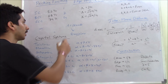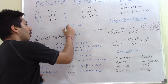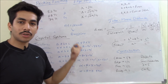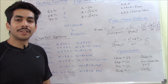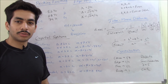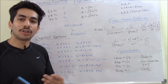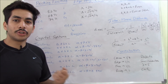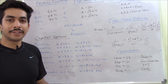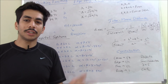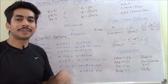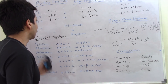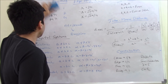N in Bragg's law is the order of the reaction. Whenever you are given a question based on Bragg's law, you will be told it is a first order, second order, or third order Bragg's law equation. The order signifies the value of N. If it's a second order then N = 2; if it's a third order then N = 3.